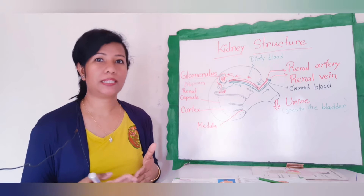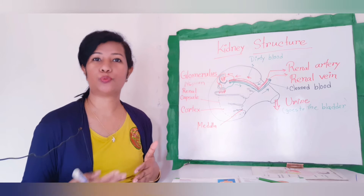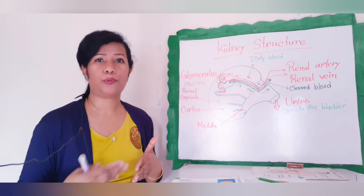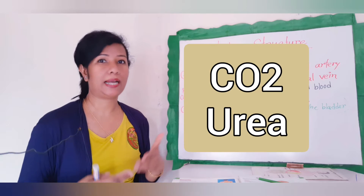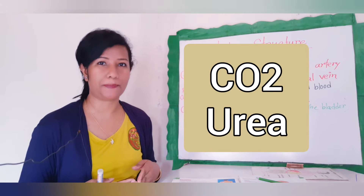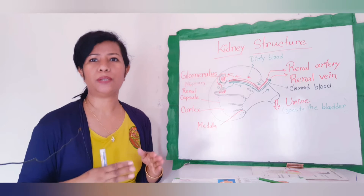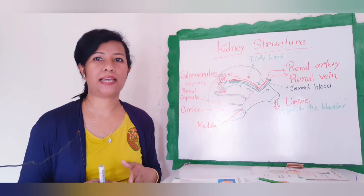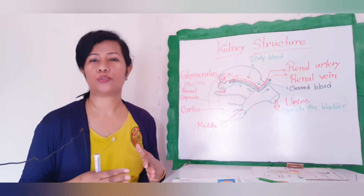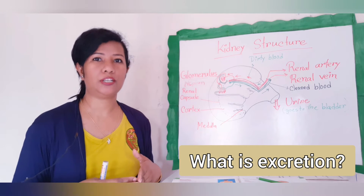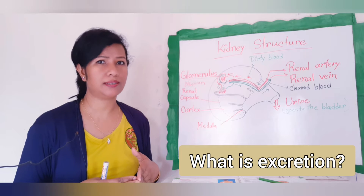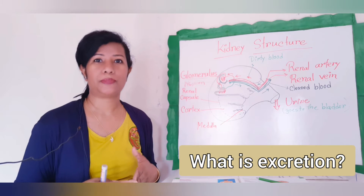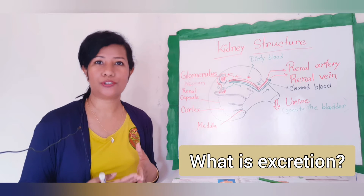Even whenever you are sleeping, your body produces waste products — these are poisonous substances. These poisonous substances include carbon dioxide and urea. Your body must get rid of these waste substances as they are harmful. This waste removal is called excretion.